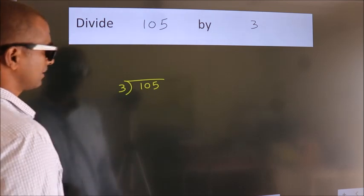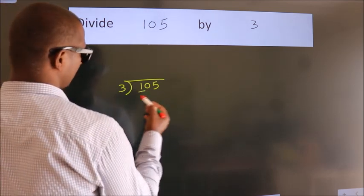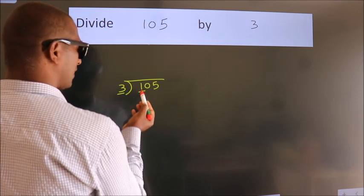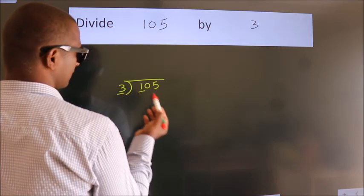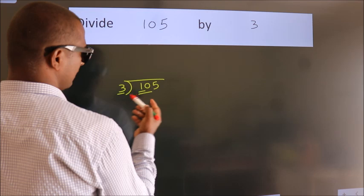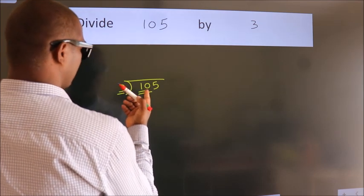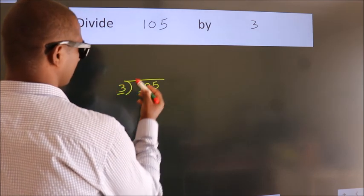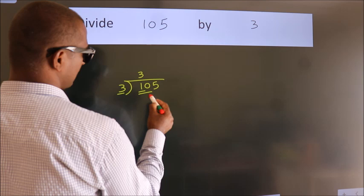Next. Here we have 1, here 3. 1 smaller than 3, so we should take 2 numbers, 10. A number close to 10 in 3 table is 3 3s, 9.